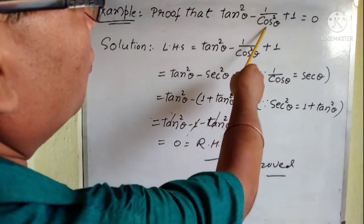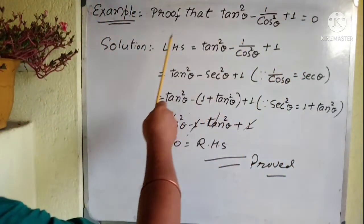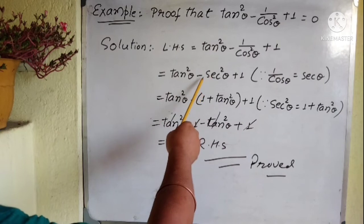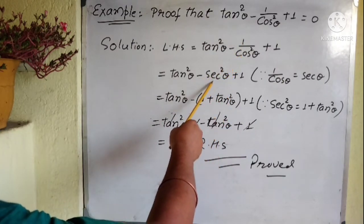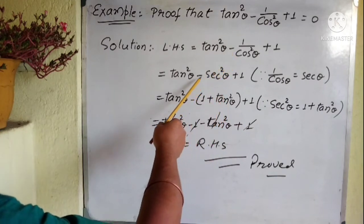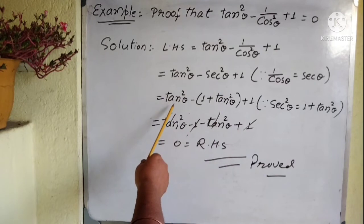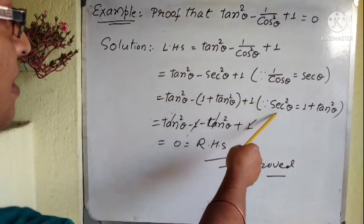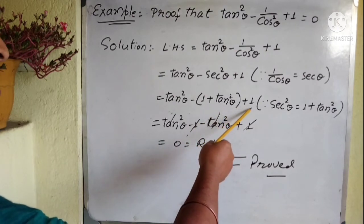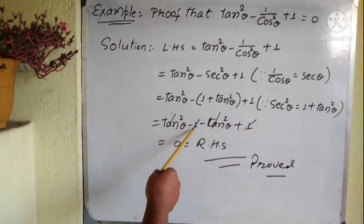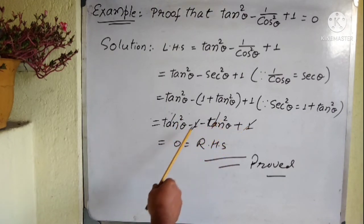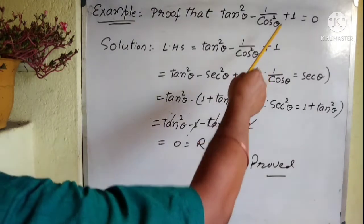Another example: Prove that tan squared theta minus 1 by cos squared theta plus 1 equals 0. Take the left hand side: tan squared theta minus 1 by cos squared theta plus 1. Since 1 by cos theta equals sec theta, write 1 by cos squared theta as sec squared theta. We know sec squared theta equals 1 plus tan squared theta, so substitute: tan squared theta minus (1 plus tan squared theta) plus 1. Opening the bracket: tan squared theta minus 1 minus tan squared theta plus 1 — tan squared theta cancels, and minus 1 plus 1 cancels — giving 0, which is the right hand side. Hence proved.